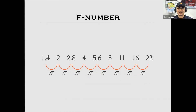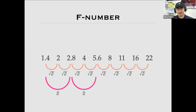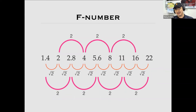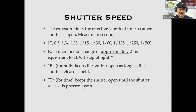Each stop differs by a factor of 1.4 — multiply or divide. Two stops of light would be the square root of 2 multiplied by the square root of 2, which equals 2. So f1.4 to f2.8 is two stops, f2 to f4 is two stops, f4 to f8 is two stops, f8 to f16 is two stops, and so on. This pattern of approximately doubling or halving makes it easier to understand.